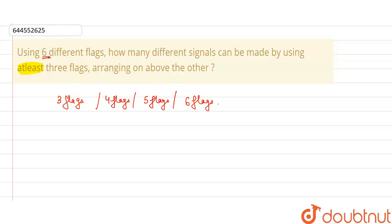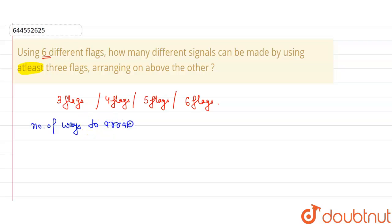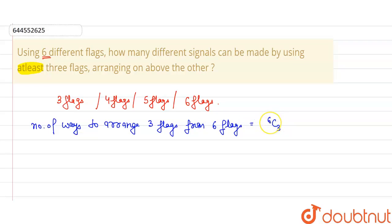For Case 1, the number of ways to arrange three flags from six flags equals 6C3 into 3 factorial. First we select three flags, then we arrange them. For Case 2, the number of ways to arrange four flags is 6C4 into 4 factorial.